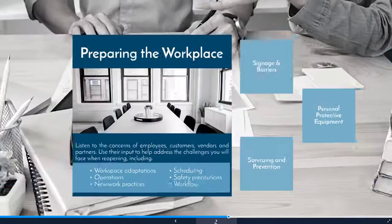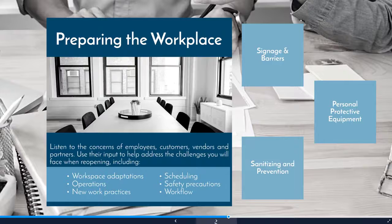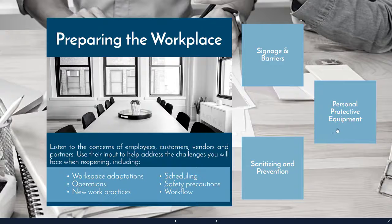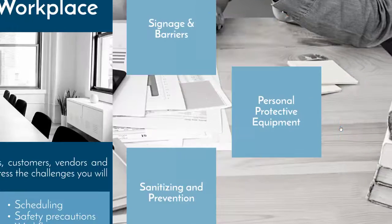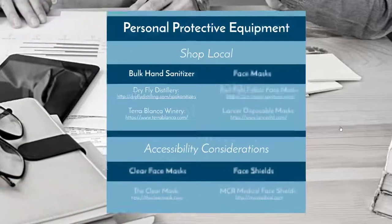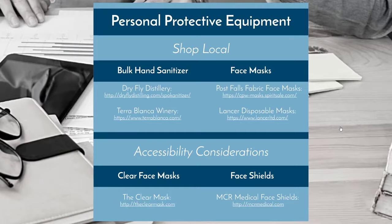But let's say you've made it to the Preparing the Workplace slide, and you already know everything there is to know about signage and barriers, so you want to skip that slide. You can just move your cursor over the Personal Protective Equipment square and either click on it or scroll forward if you are using a mouse.